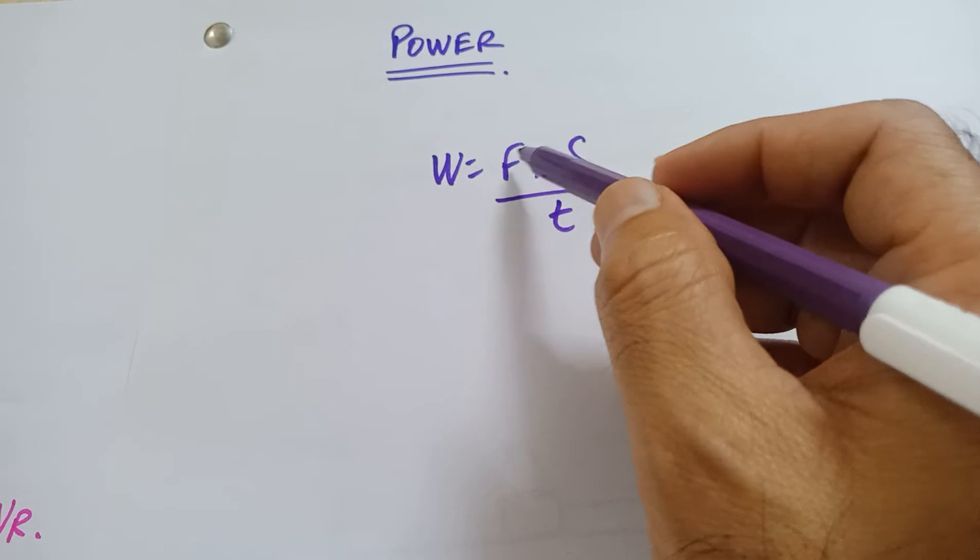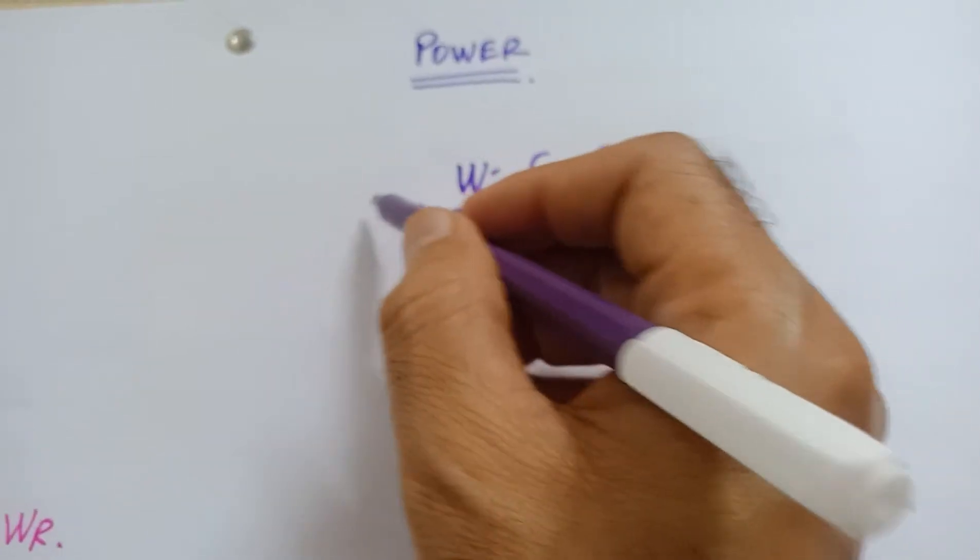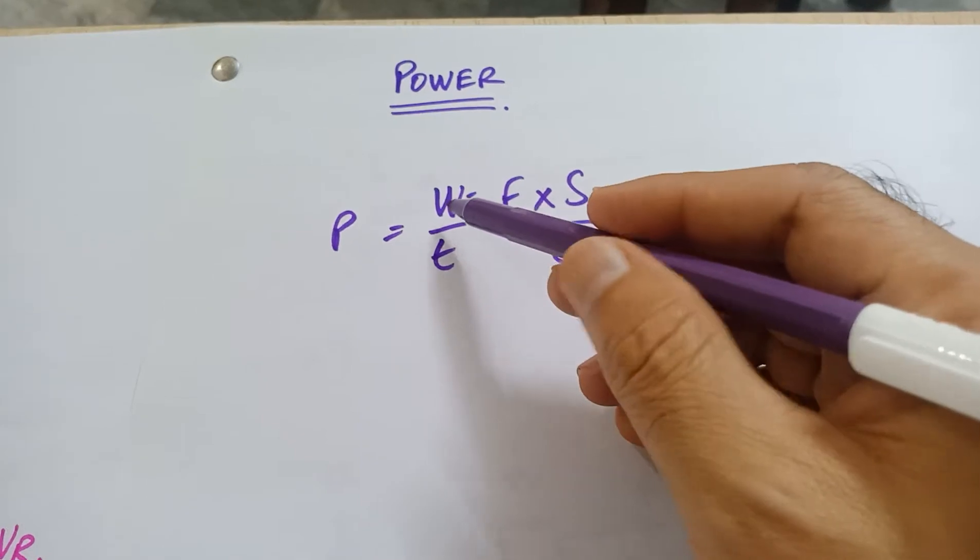If you divide the work by the time, this is divided by time, so that is going to be the power. Power is the work divided by the time.